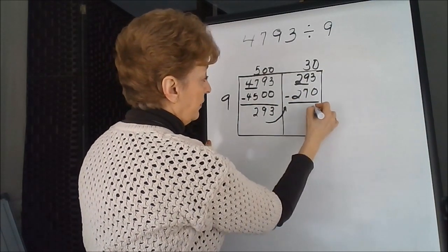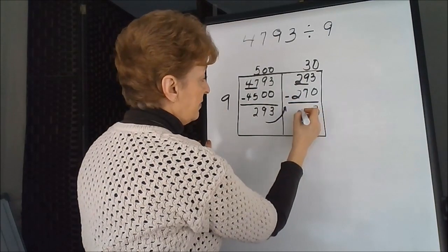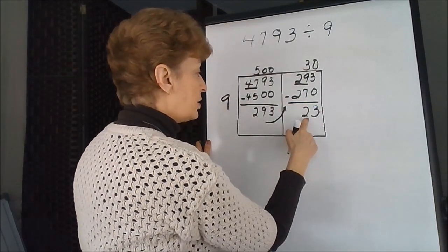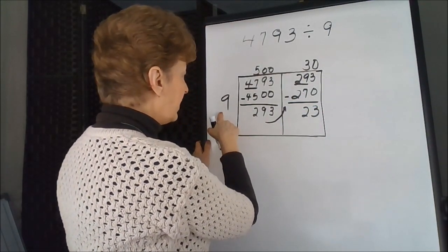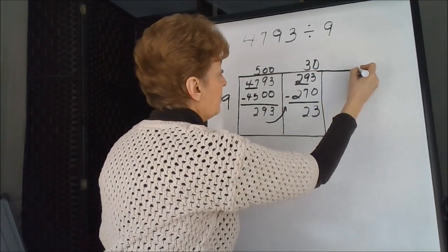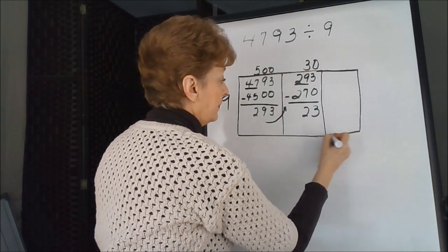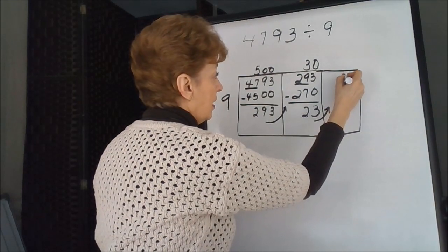Subtract. 3, 9 take away 7 is 2. 23 is still bigger than 9, so we're going to need another box and bring the 23 up.